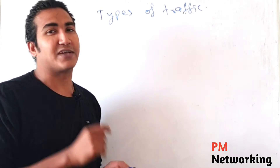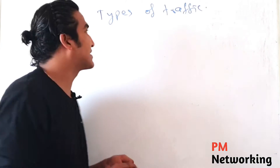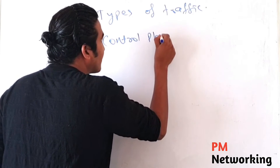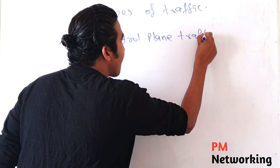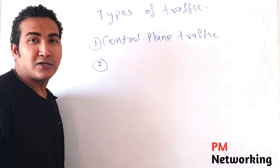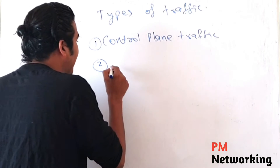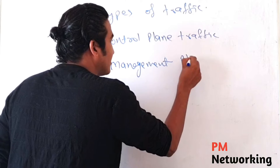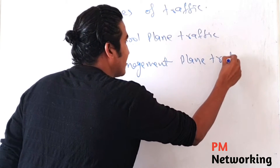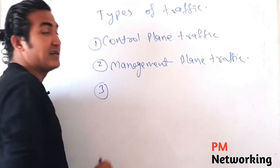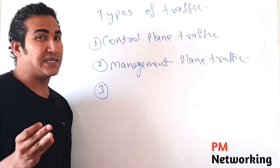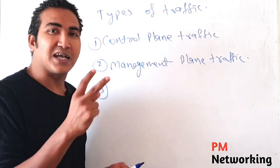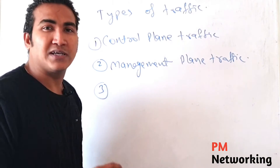Remember, there are three types of traffic. Number one: control plane traffic. Number two: management plane traffic. Number three: data plane traffic. Always keep in mind — control plane, management plane, and data plane.